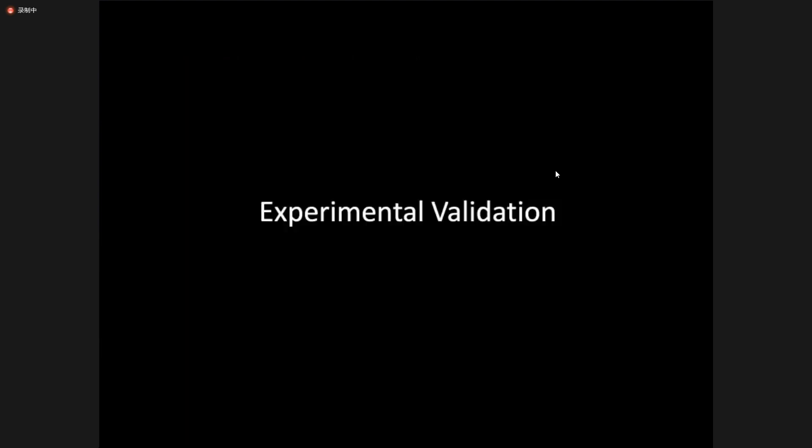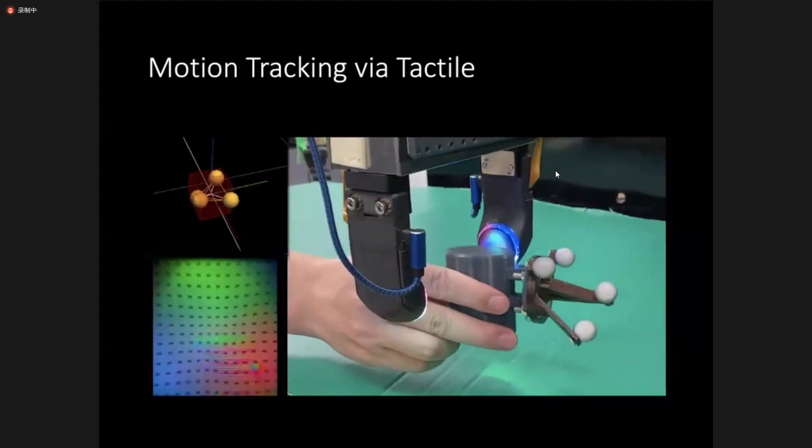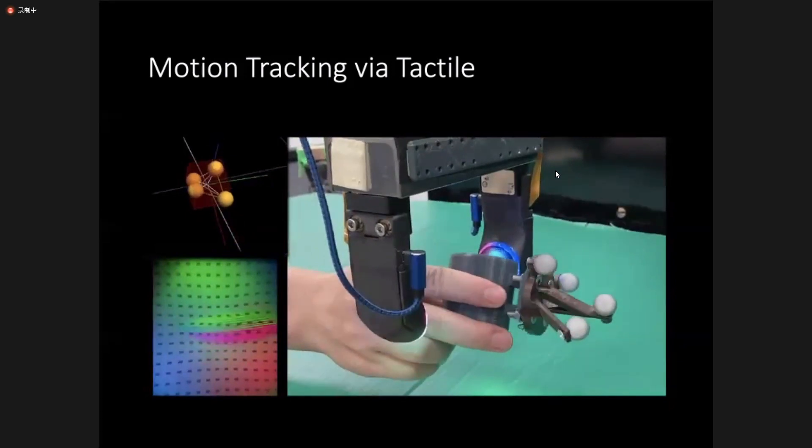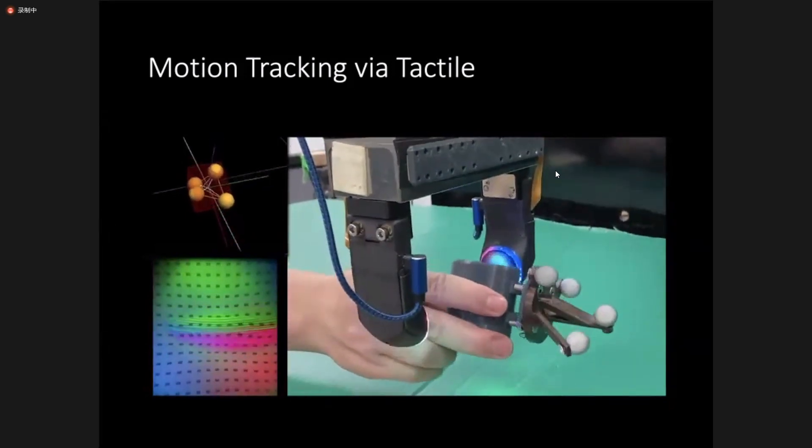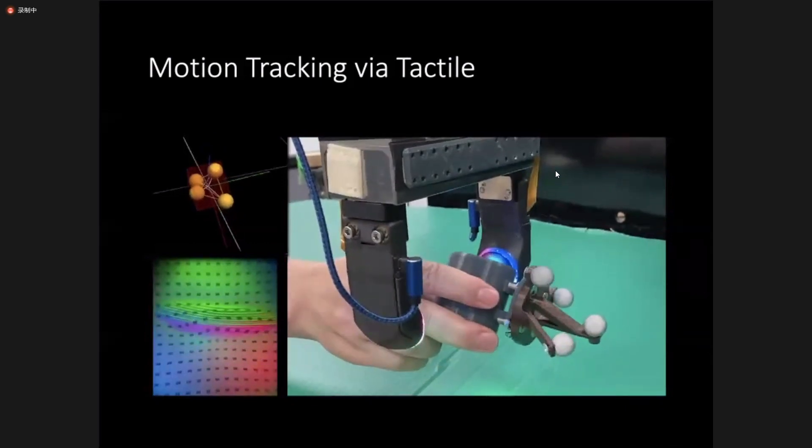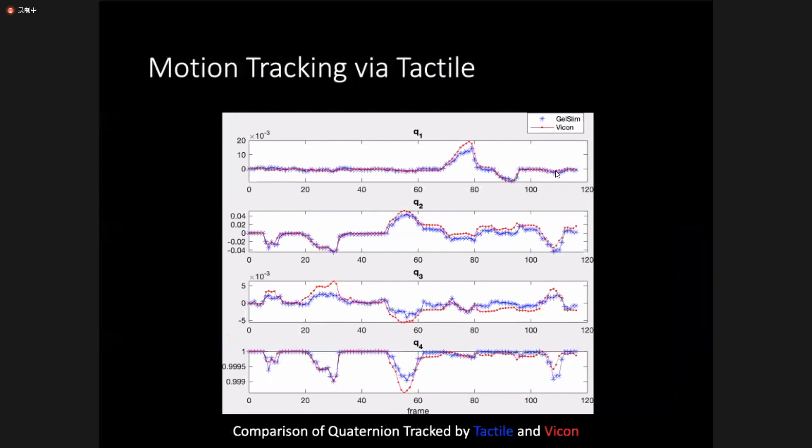In the following, we show experimental validations. In this experiment, the object is in contact with our tactile sensor. We move the object by hand randomly and track its motion with the Vicon tracking system, only for comparison as the ground truth. We compare the tactile tracked rotation with the Vicon tracked rotation, represented as quaternions here. We can see that without knowing geometry of the object and without placing markers on the object, tactile sensing can achieve motion tracking of similar accuracy to that of a Vicon, which is the most accurate commercial motion tracking system.